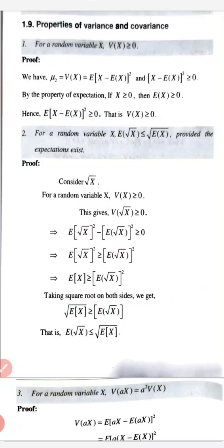The first property: for a random variable x, variance of x is greater than or equal to 0. That is, for a random variable, the variance is always positive. Proof: mu_2 equals variance of x equals expectation of (x minus E[x]) squared. That term (x minus E[x])² is a square term, so it is always greater than or equal to 0. By the property of expectation, if x is positive then expectation of x is always positive. Hence, expectation of (x minus E[x])² is greater than or equal to 0, that is, variance of x is greater than or equal to 0.